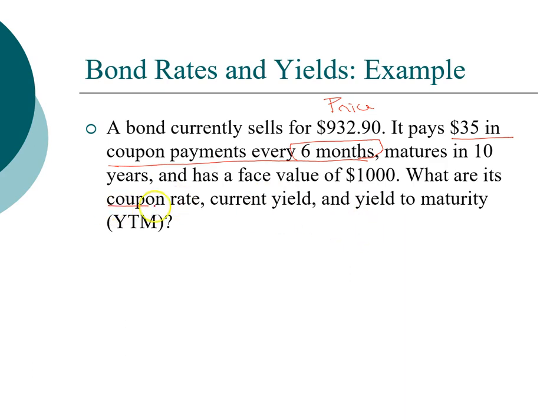First, let's take a look at coupon rate. Coupon rate will be related to coupon. We know that it's $35 every six months, so that means you'll get $70 in coupon payments every year. So $35 times 2, two times per year, is $70.